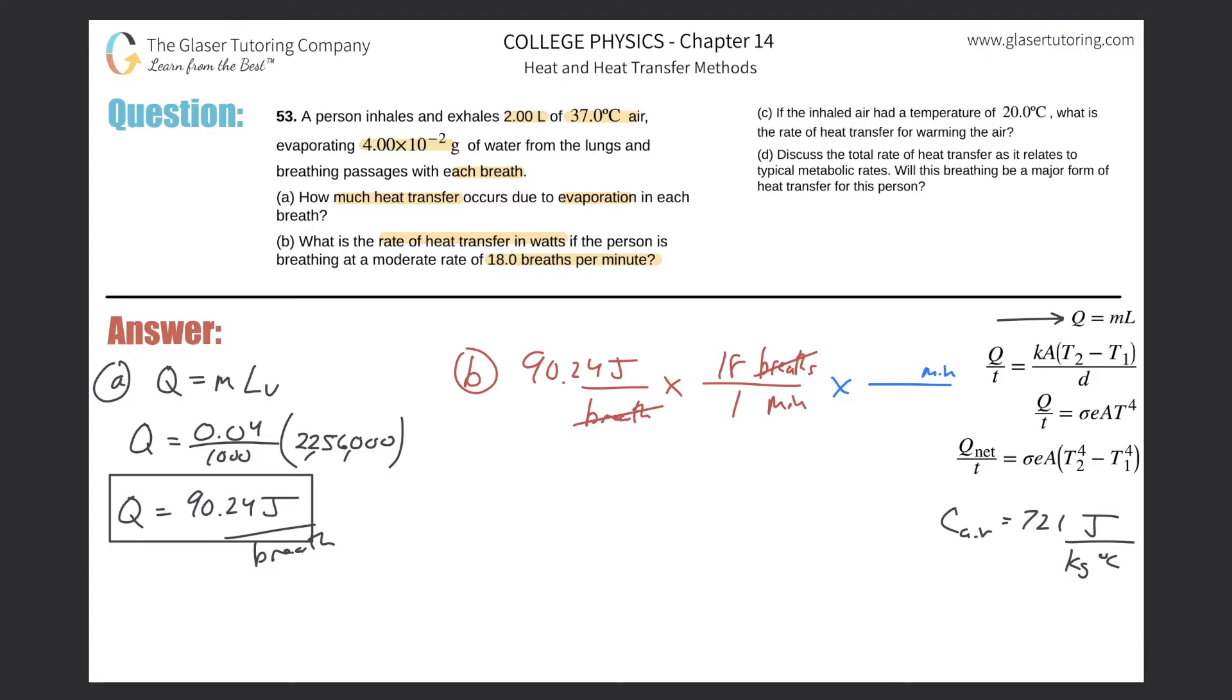So we just got to do one more step in this conversion. Minutes on the top, seconds on the bottom. One minute is 60 seconds. And now you will have joules per second, which is a watt. So let's just calculate that now. So there's going to be 90.24 multiplied by 18 divided by 60. So this is about 27.1 or so. So 27.1. And that's going to be in terms of joules per second, which is a watt.